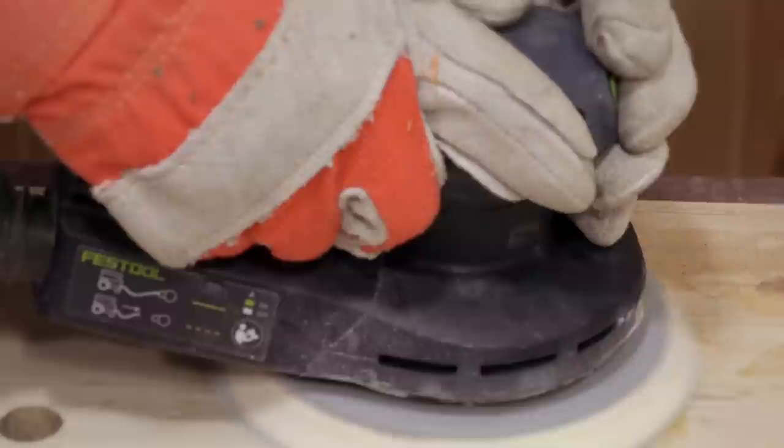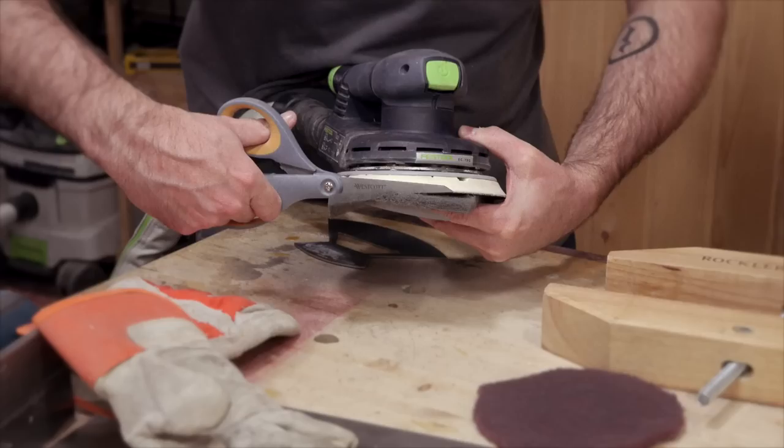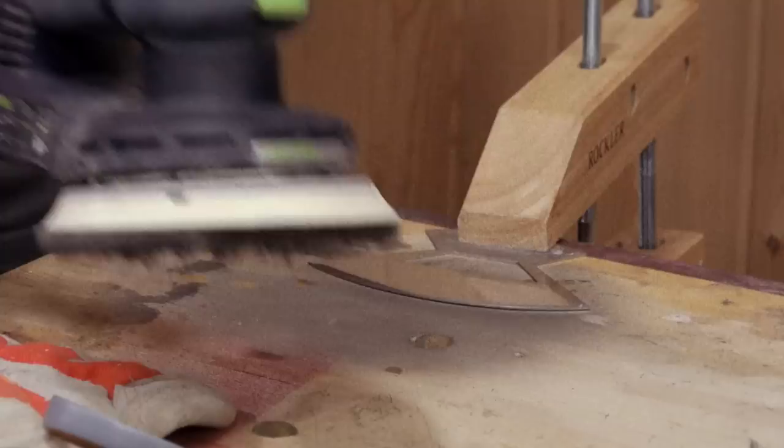I sanded the face sides with my random orbit sander up to 240 grit and then stuck on some synthetic finishing pads to polish the metal. And then a bit of sandpaper to smooth out the rough edges.